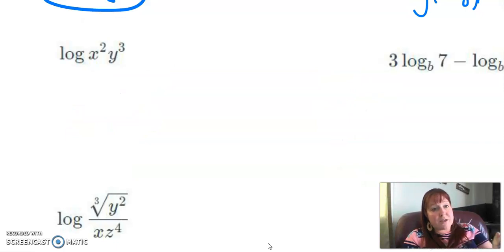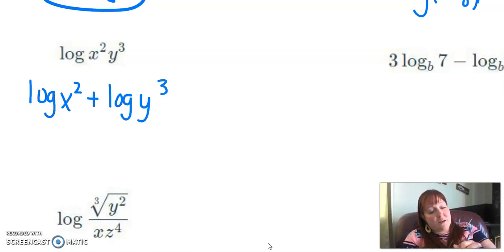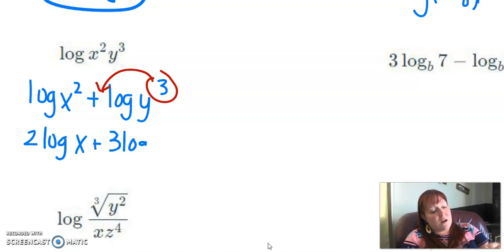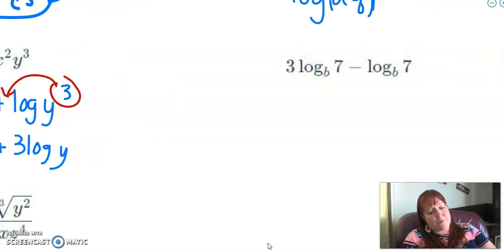Now this one we're going to split apart. So it's multiplying, so that means I add these two together, log of x squared plus log of y cubed. And then I can bring these exponents out front, and I get two log of x plus three log of y. That's actually really useful when you use logs.